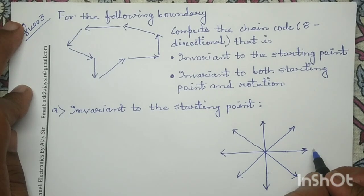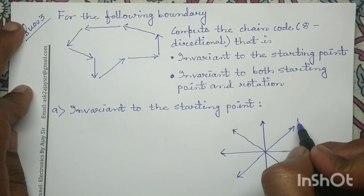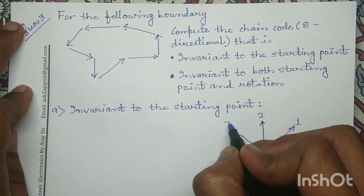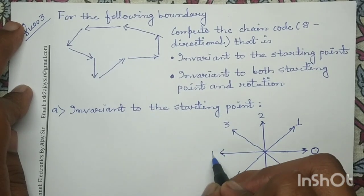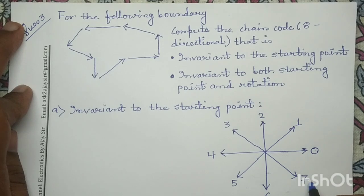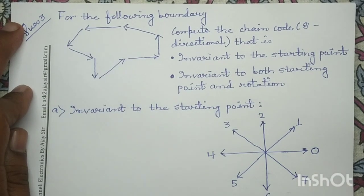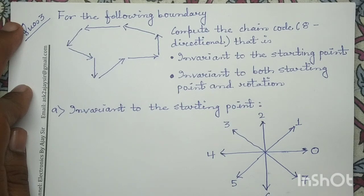In eight-directional code, this direction is assigned with directional code zero, then one, two, three, four, five, six, and seven. In this question, a starting point is not given to us.